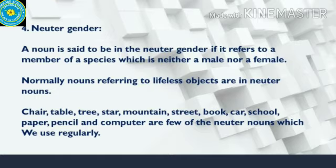Some examples: chair, table, tree, your bed, your toys, the mountain around you, the street, the book, car, school, your pen and paper, the computer that you use, the phone in your hand — these are all neuter genders we use regularly.